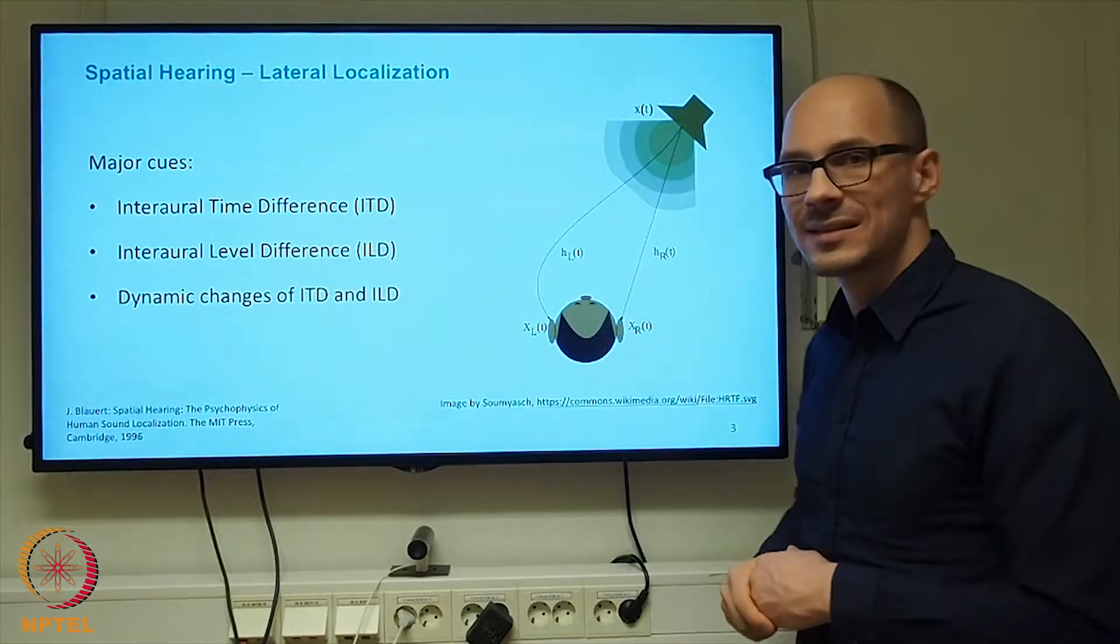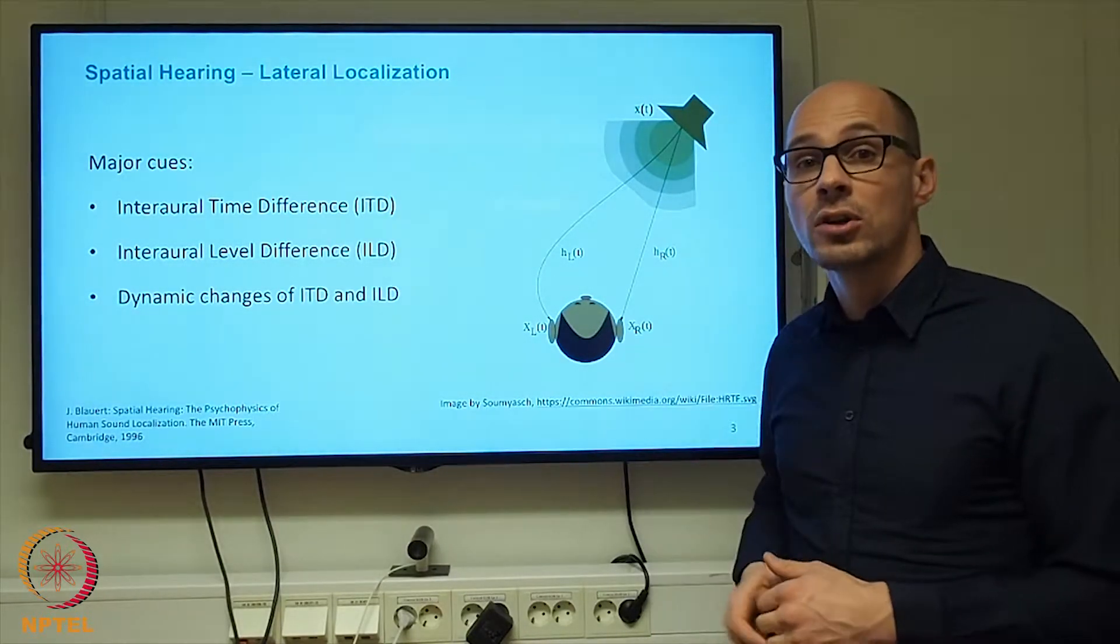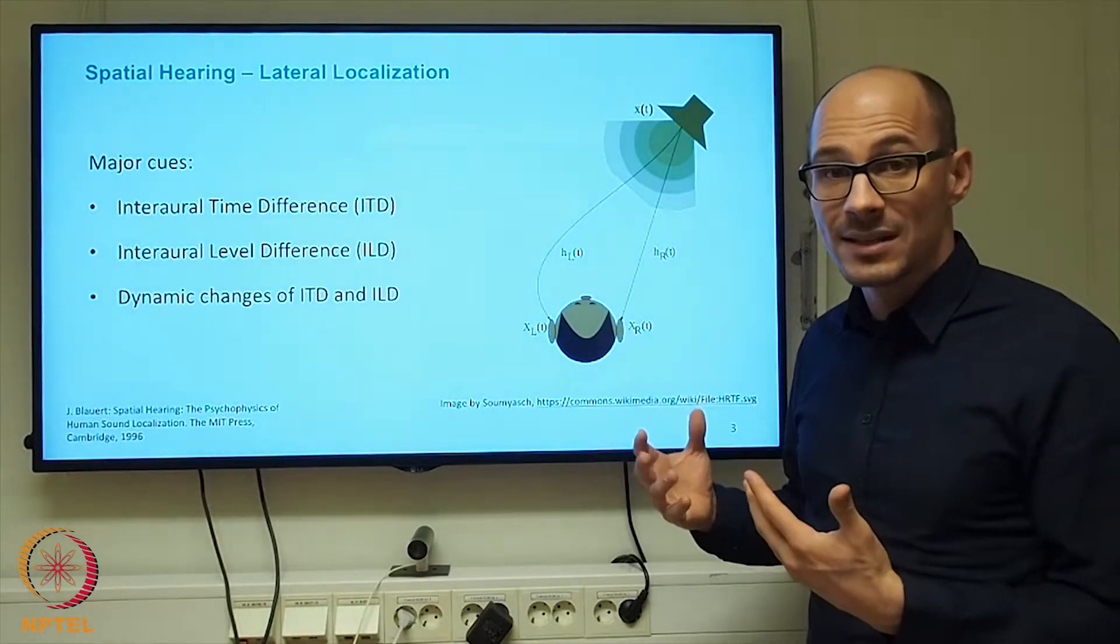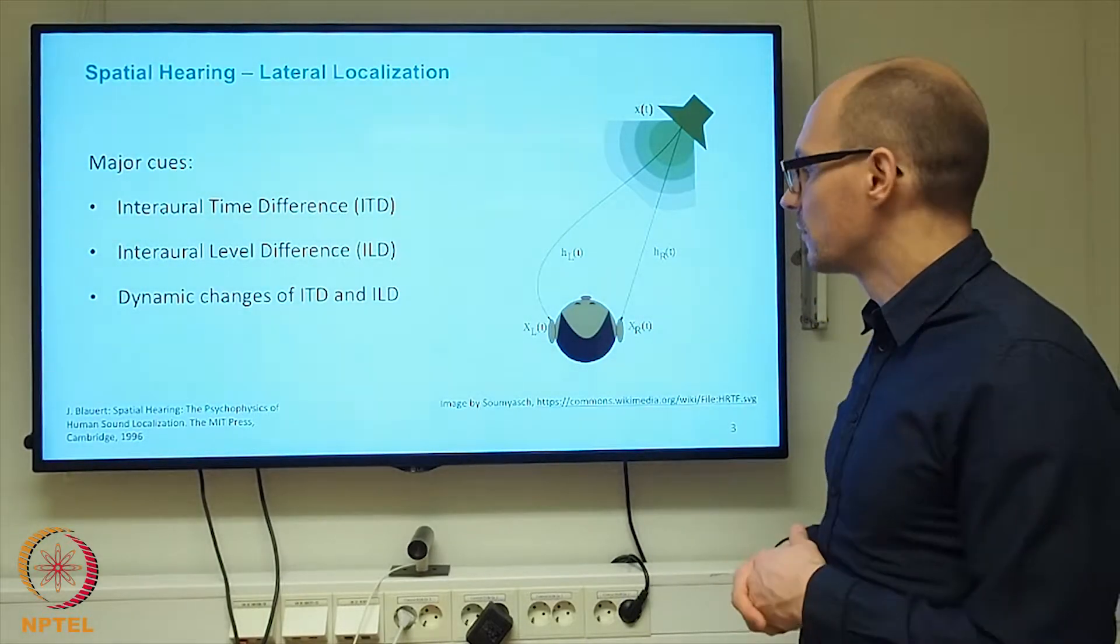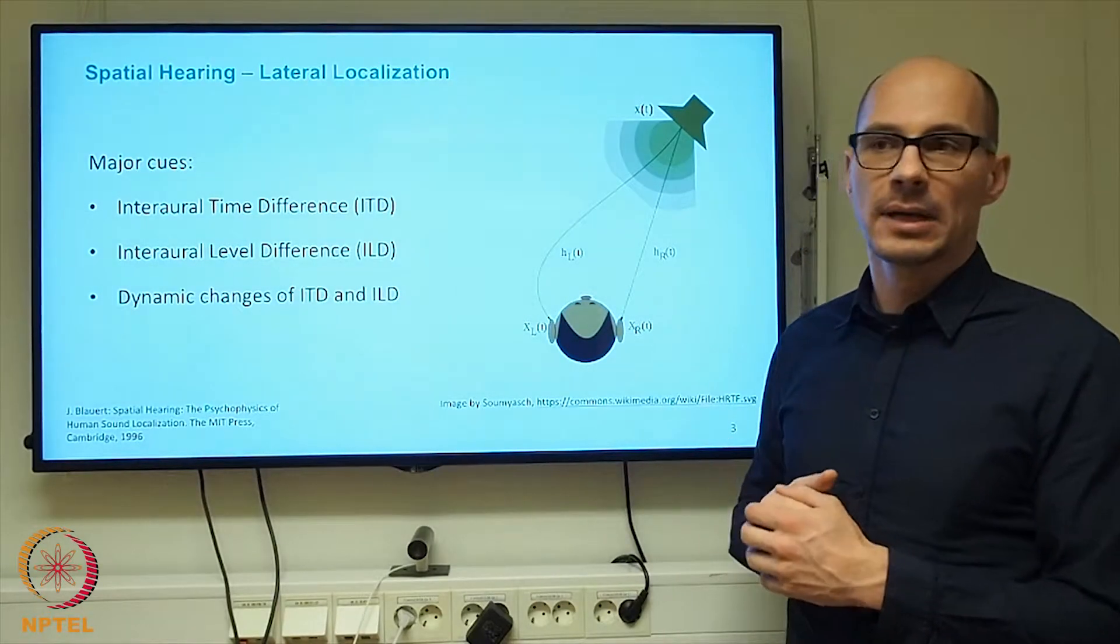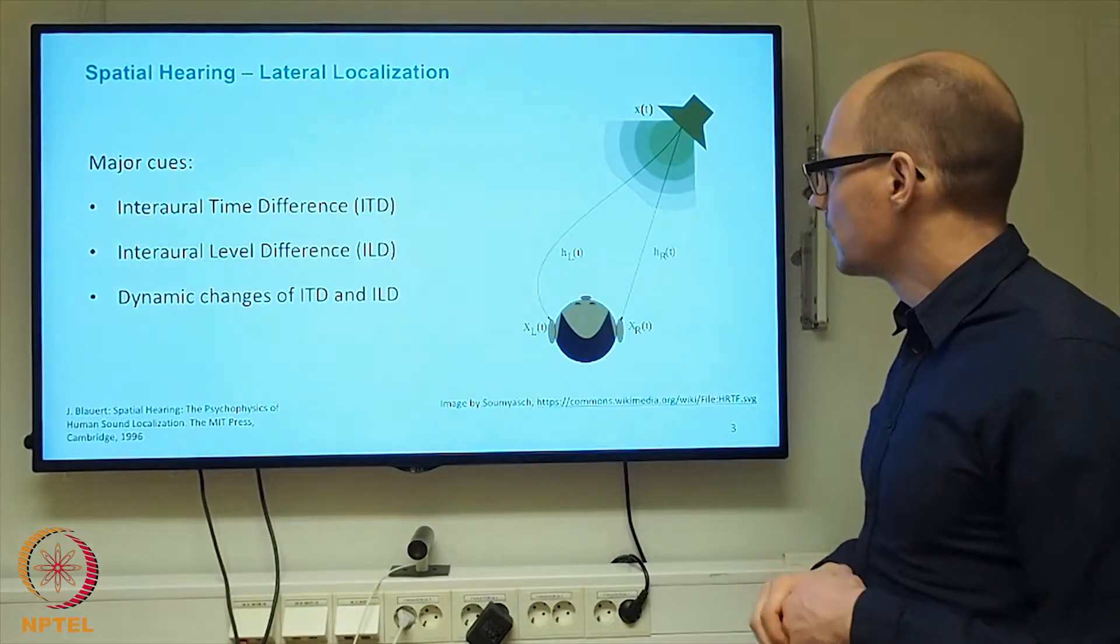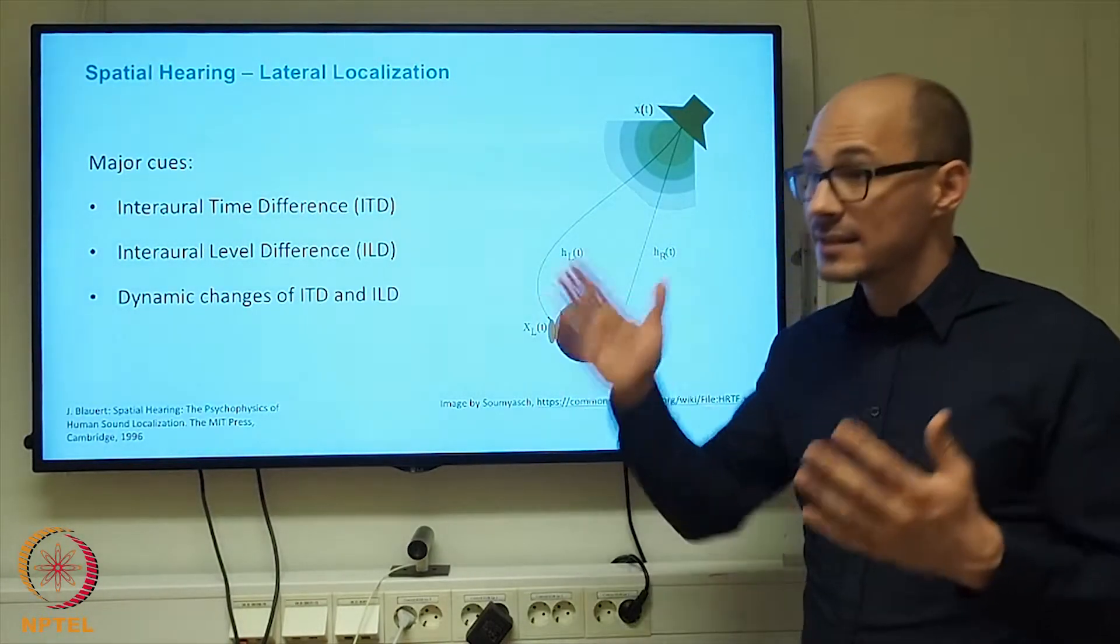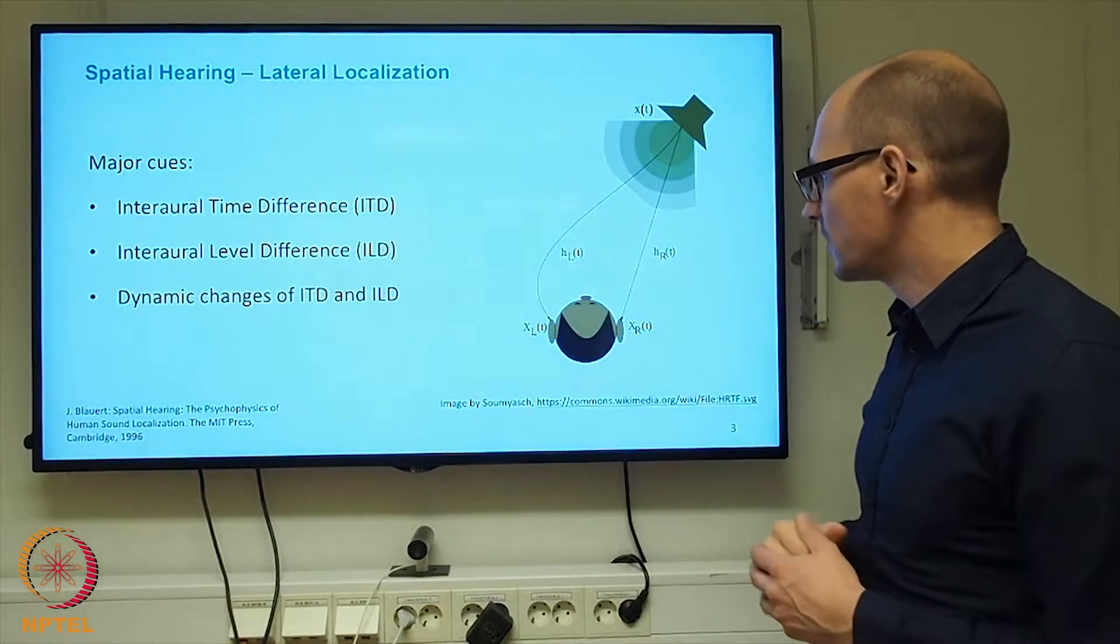This difference in path length causes a timing difference, and our auditory system is able to sense this. It is able to measure how much of a timing difference is there. The differences that arise are in the order of maximally a couple hundred microseconds. So it's very short differences. But our auditory system is able to sense this, and this is how it knows that the sound source was located lateral.